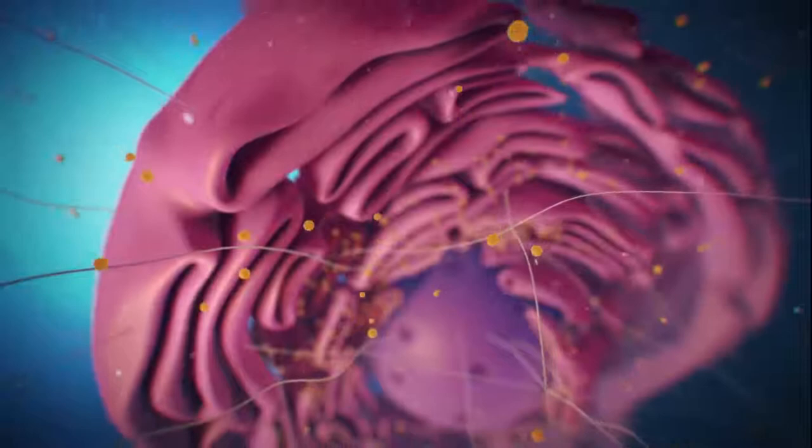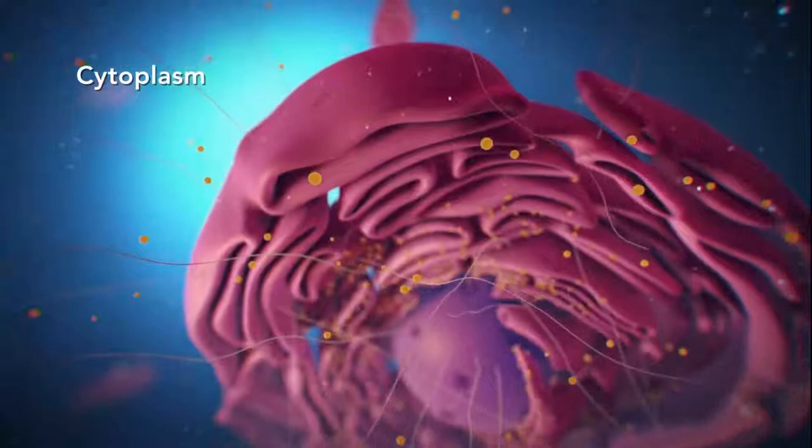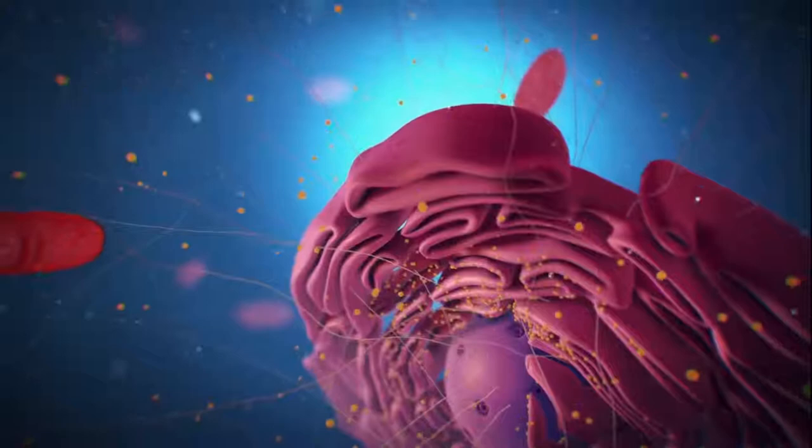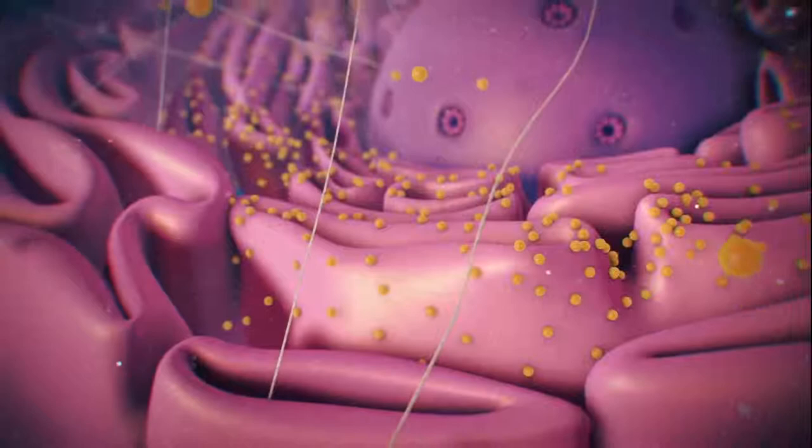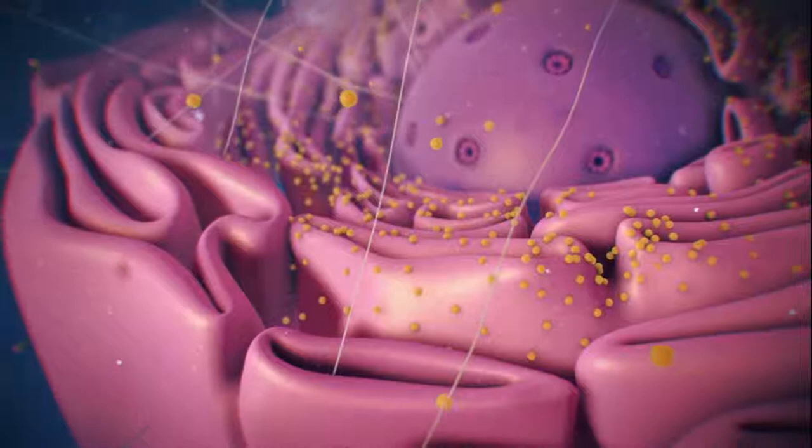Outside the nucleus, the ribosomes and the rest of the organelles float around in cytoplasm, which is the jelly-like substance. Ribosomes may wander freely within the cytoplasm or attach to the endoplasmic reticulum, sometimes abbreviated as ER. There are two types of ER.